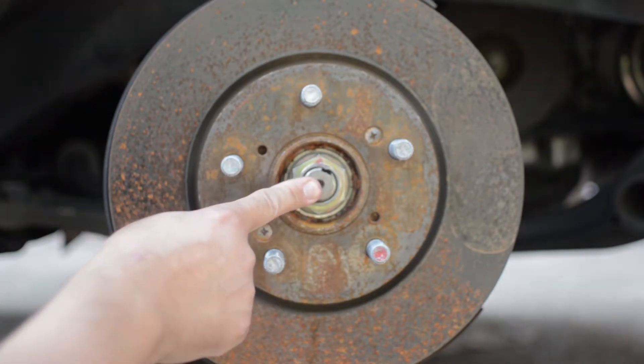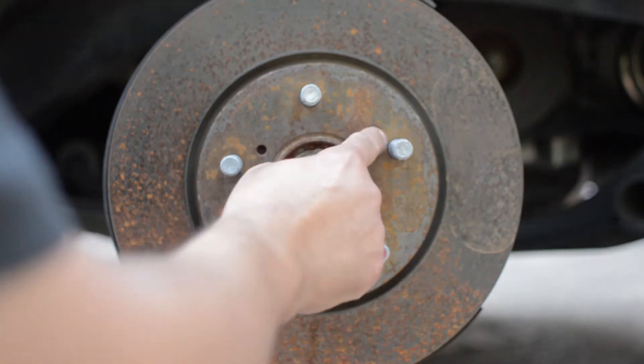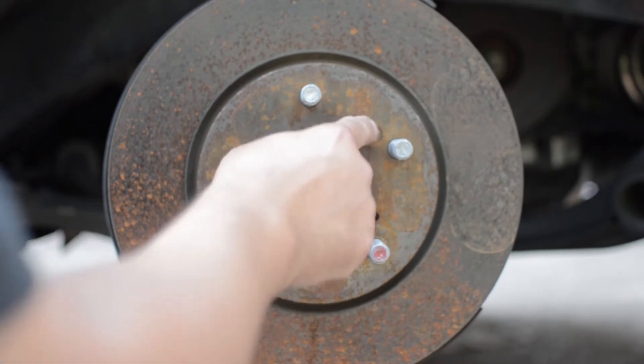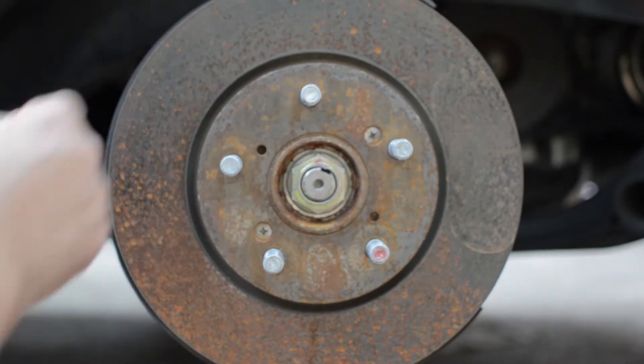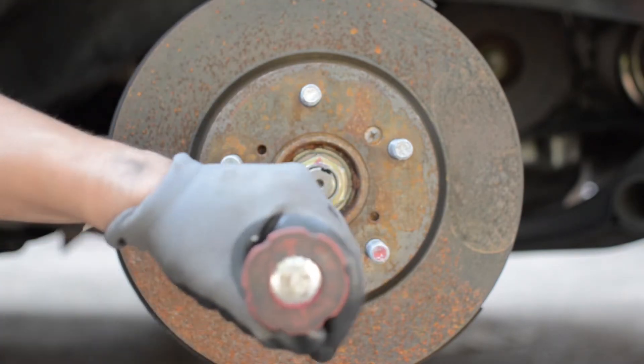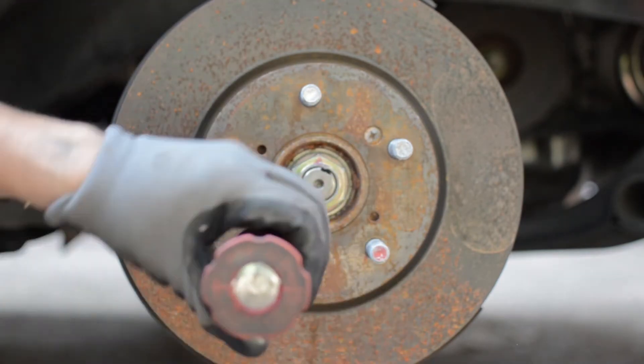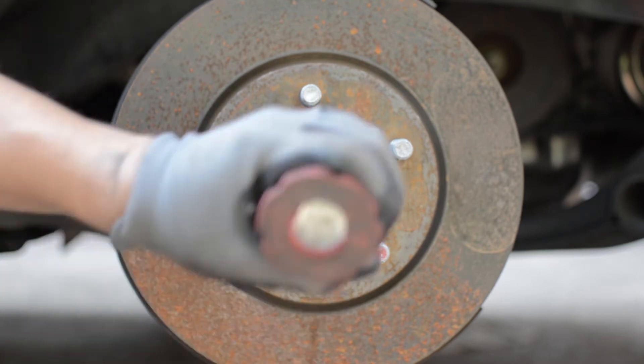Now remove the axle nut. We need to remove the screws that secure the rotor onto the knuckle. I'm using an impact screwdriver to break loose the screws.